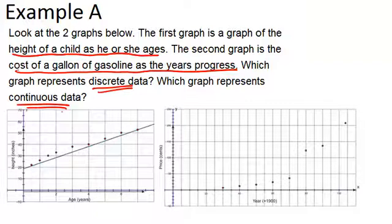Alright, so discrete data is data where it doesn't make sense to connect the individual points because nothing existed, or at least not continuously existed, between those points. Whereas with continuous data, it makes sense to connect the points because something was happening in between those points.